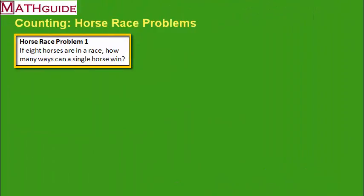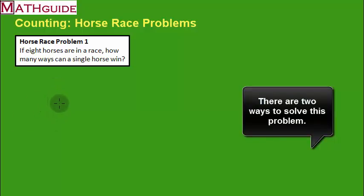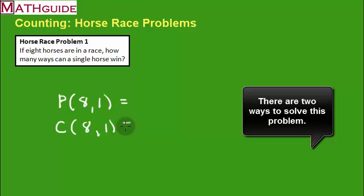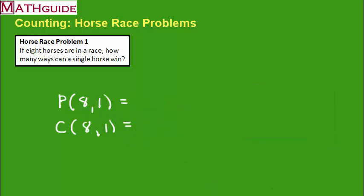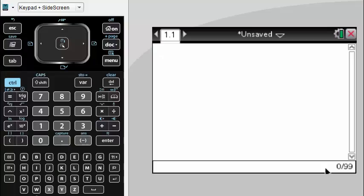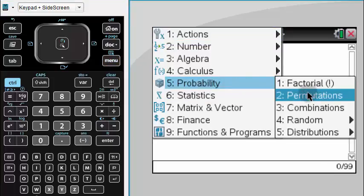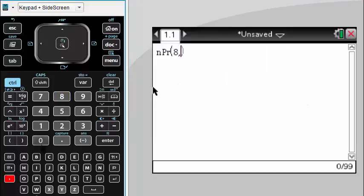Here's our first problem: if eight horses are in a race, how many ways can a single horse win? This is an interesting problem because there are two different ways to approach it. You could say order matters since it's a horse race, so you'd use permutations with eight horses choosing one. Or you could say it's a combinations problem with eight horses choosing one. Let's plug both into the calculator and see what happens. Using permutations, eight comma one — we get eight.